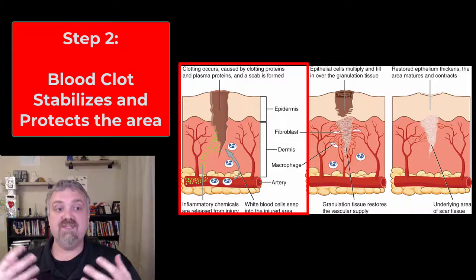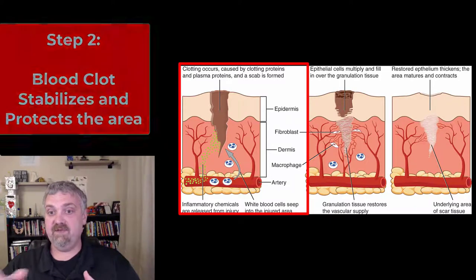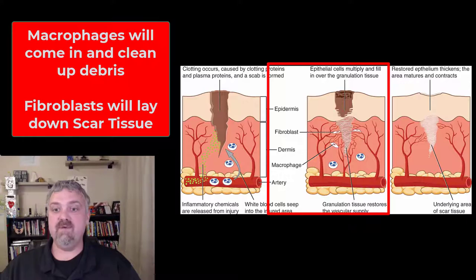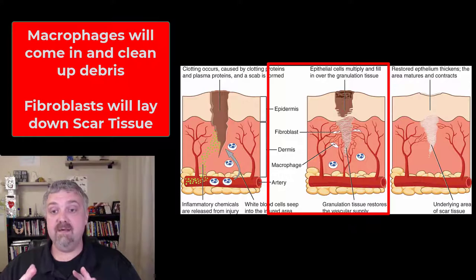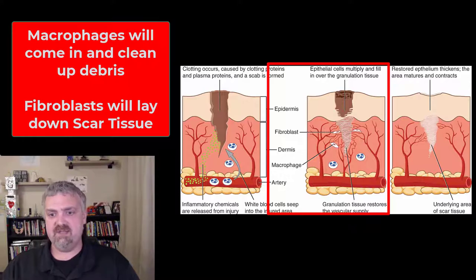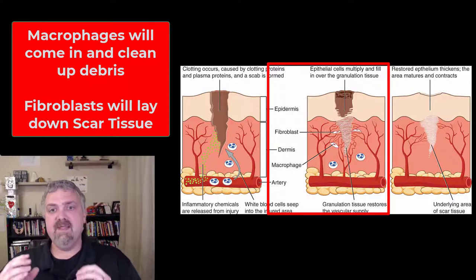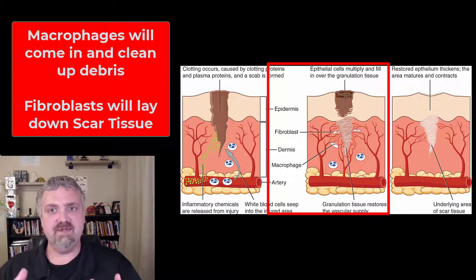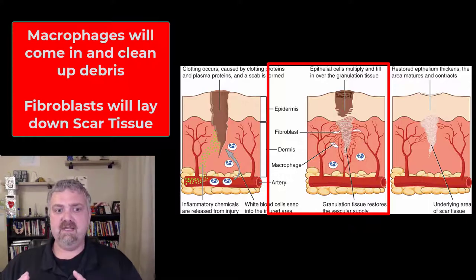Also during this step, you're going to see stem cells starting to show up in the area. A few key cell players you see here: macrophages are going to come in and clean up the debris so new tissue can form. Fibroblasts are going to come in and form the scar tissue to replace the tissue that was there. Endothelial cells are going to come in to form granulation tissue that's going to restore the vascular supply. Fibroblasts are going to lay down scar tissue to replace the tissue, so the skin is going to be renewed, but not as good as it used to be — you'll still see a scar.